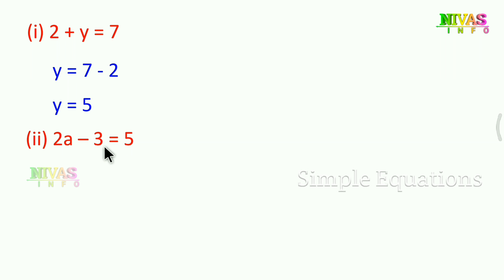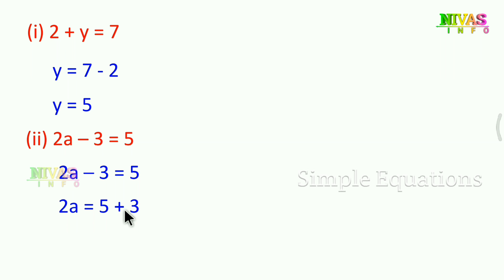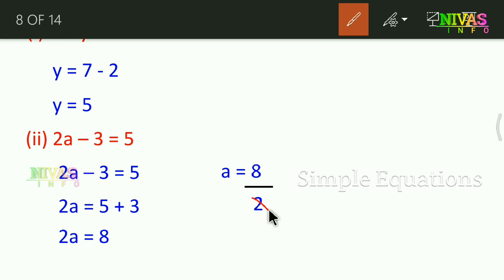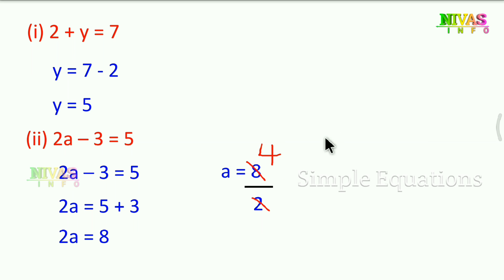Next question: 2a minus 3 is equal to 5. We keep 2a on the left and transpose minus 3 to the right, where it becomes plus 3. So 2a equals 5 plus 3, which is 8. Now we have a multiplication relation, so we divide: a equals 8 divided by 2. Therefore a is equal to 4. The answer is 4.